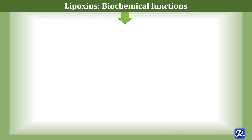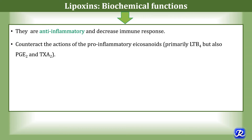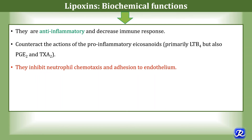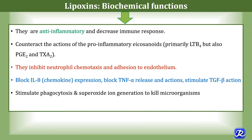Though leukotrienes and lipoxins are both eicosanoids derived from arachidonic acid, and lipoxins are also derived from leukotrienes, their actions are entirely different. Leukotrienes are pro-inflammatory, while lipoxins are anti-inflammatory. The functions of lipoxins include decreasing the immune response and counteracting pro-inflammatory eicosanoids — primarily leukotriene B4 but also prostaglandins and thromboxins. They inhibit neutrophil chemotaxis and adhesion of leukocytes to endothelium, block interleukin-8 expression, block tumor necrosis factor-alpha release and actions, and stimulate TGF-beta actions. They also stimulate phagocytosis and superoxide ion generation to kill microorganisms — these are the immunoregulatory functions of lipoxins.